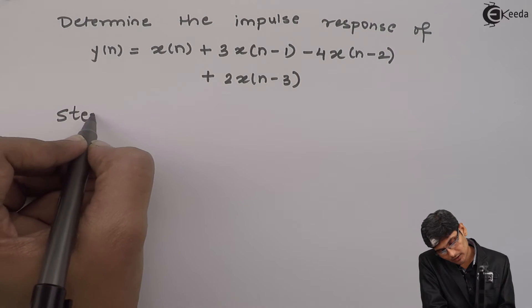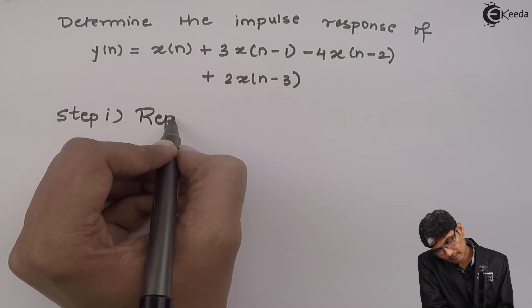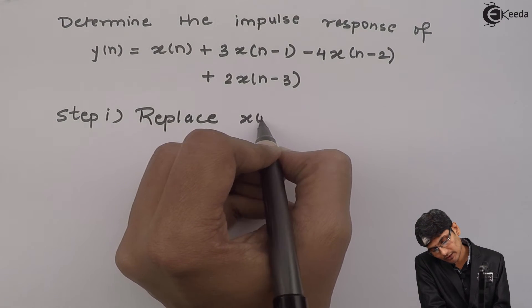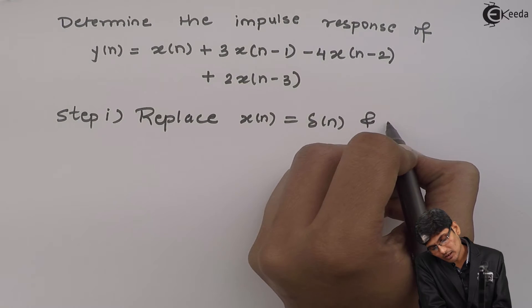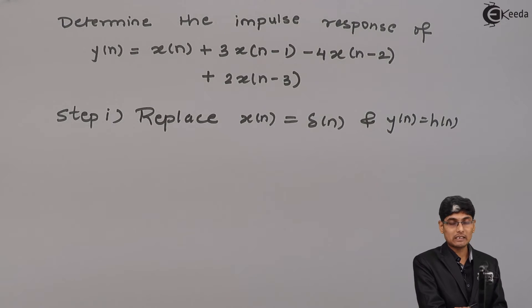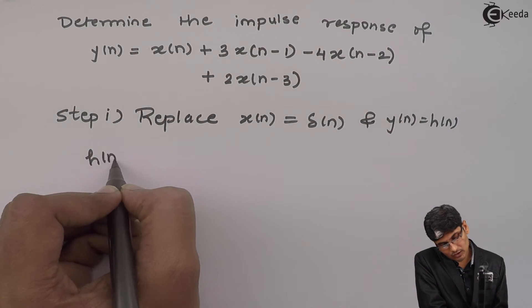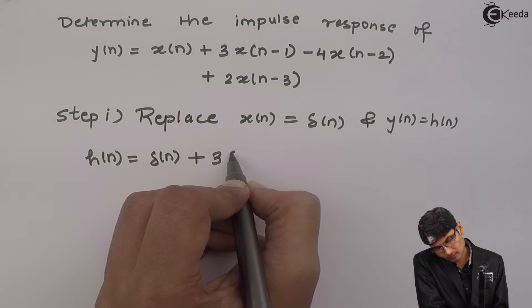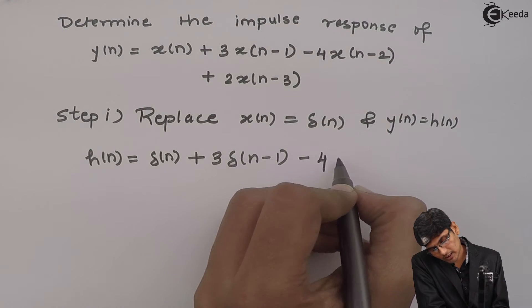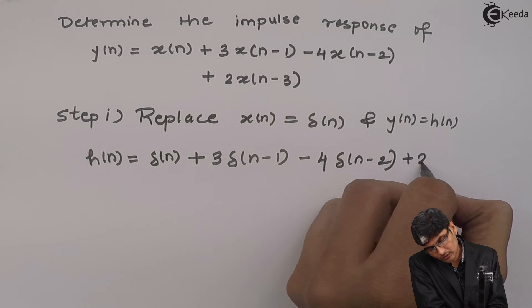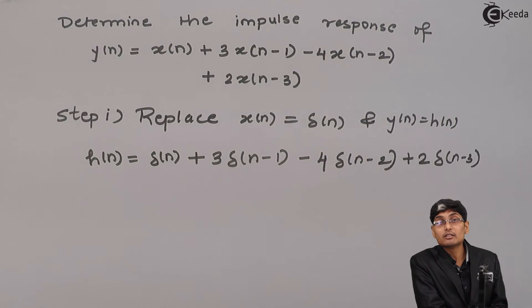Step 1 of the solution: replace. Whenever we go for impulse response, we have to replace x of n by delta n and y of n as h of n. So, I will replace all x of n's by delta n's and y of n as h of n. So, I get h of n equals to delta n plus 3 delta n minus 1 minus 4 delta n minus 2 plus 2 delta n minus 3.